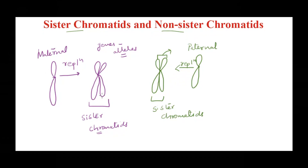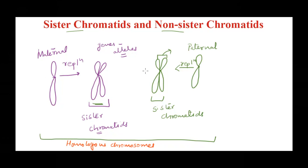So when a chromosome is duplicated, that duplicated strand is what we call sister chromatids. Now, this is a homologous pair. For homologous chromosomes, all the genes are going to be the same — at specific locations — but the alleles might be different. So for this homologous pair, these chromatids are not exactly a copy of each other; even though the genes are the same, the alleles might not be. That is why they are called non-sister chromatids.